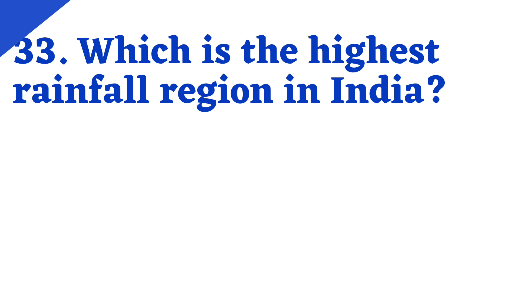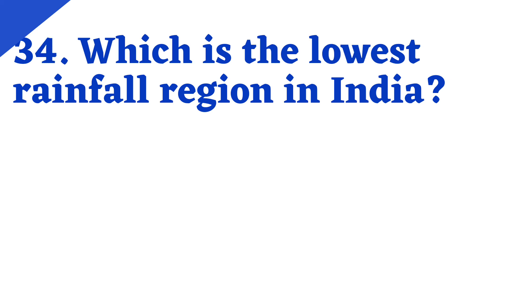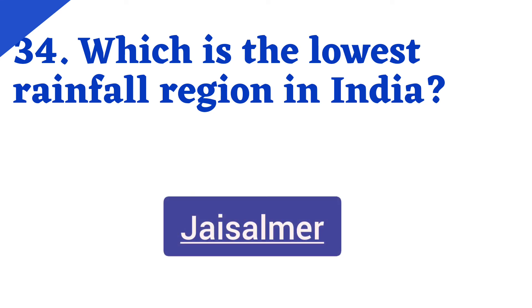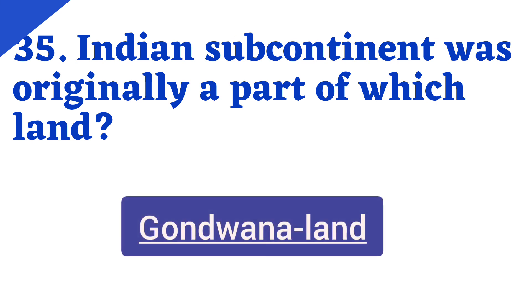Which is the highest rainfall region in India? Answer is Mawsynram. Which is the lowest rainfall region in India? Answer is Jaisalmer. The Indian subcontinent was originally a part of which land? Answer is Gondwana land.